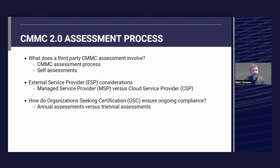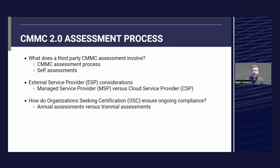Phase four is the closeout POA&Ms and assessment. Should you have not passed with 110 and you've missed some one-pointers, as long as you're at 88, you can get 180 days to fix those POA&M'd items related to those one-point practices. Then either the C3PAO you were working with can come back and assess just those practices, or you can have another C3PAO come out and assess just those practices. When you're at an 88 out of 110, you can win a contract with a conditional certification, but you have 180 days to fix those issues.